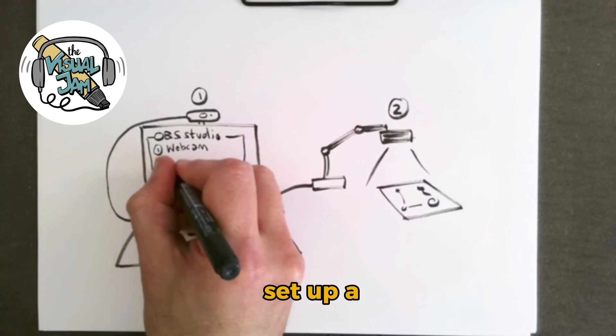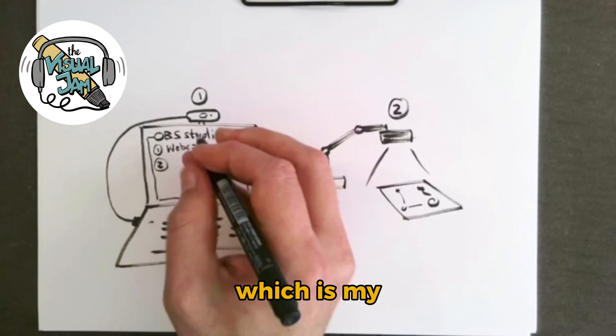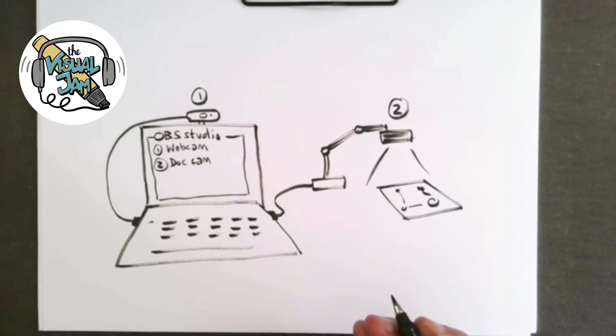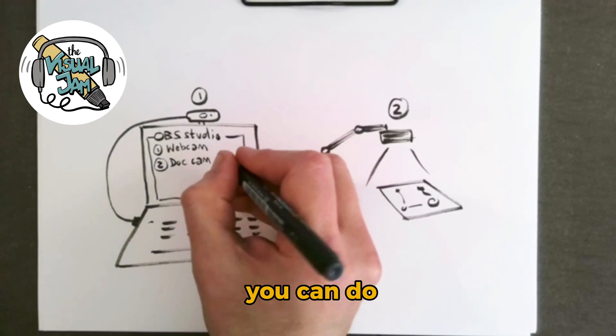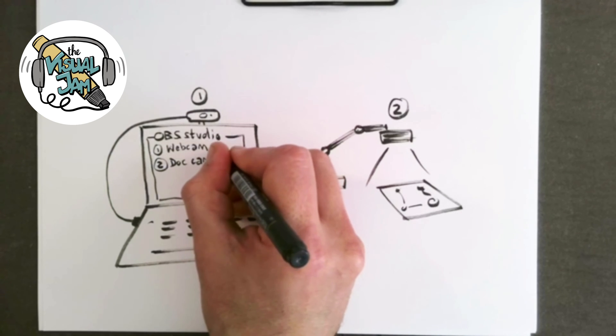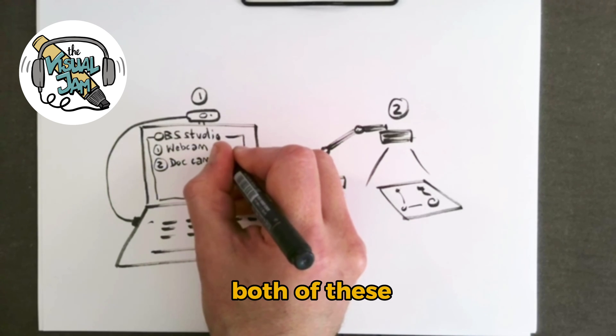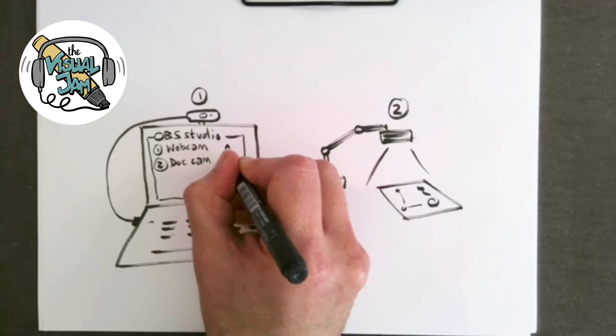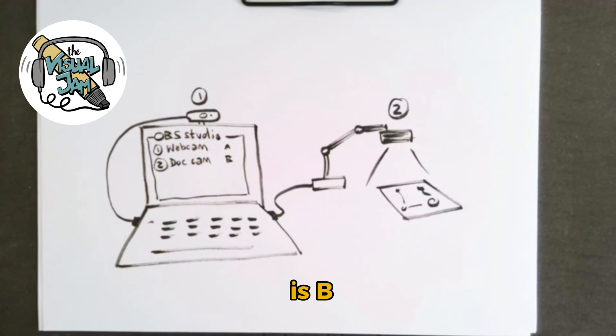And I've also set up a second scene, which is my document camera connected in OBS. And then what you can do is you can assign hotkeys to both of these. So let's just imagine that my hotkey here is A and my hotkey here is B.